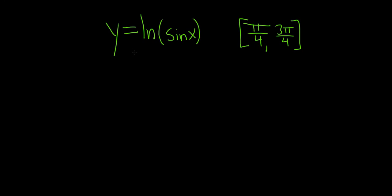In this problem, we're going to find the arc length of the graph of this function from pi over 4 to 3 pi over 4. The formula for the arc length is given by lowercase s, and it's the definite integral from a to b of the square root of 1 plus the derivative of y squared, then dx.